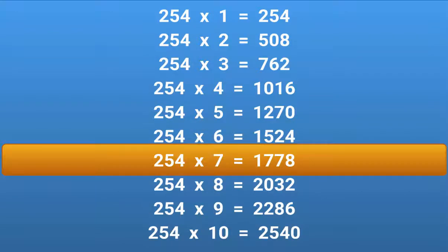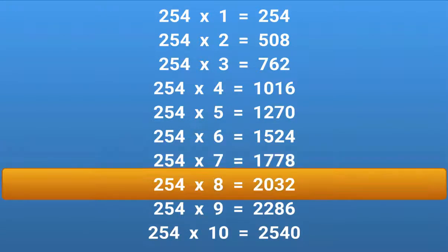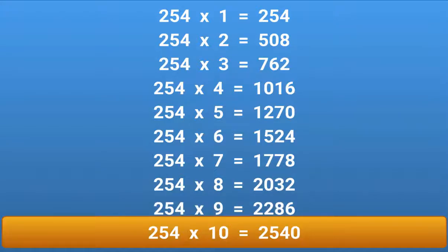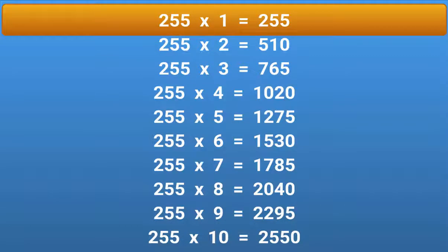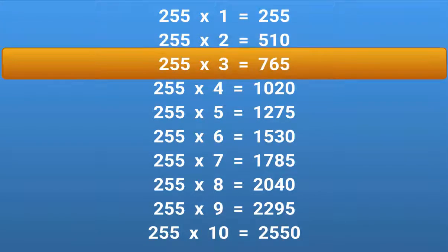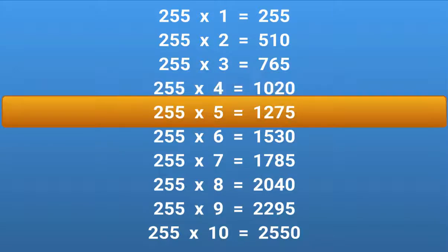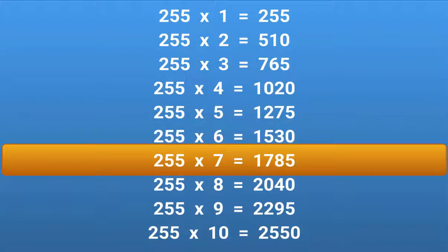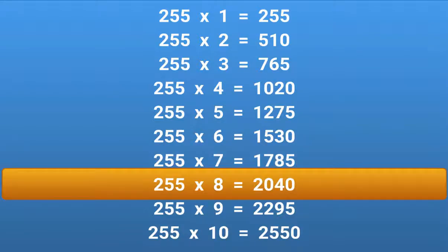254 × 8 = 2032. 254 × 9 = 2286. 254 × 10 = 2540. 255 × 1 = 255. 255 × 2 = 510. 255 × 3 = 765. 255 × 4 = 1020. 255 × 5 = 1275. 255 × 6 = 1530. 255 × 7 = 1785. 255 × 8 = 2040. 255 × 9 = 2295.